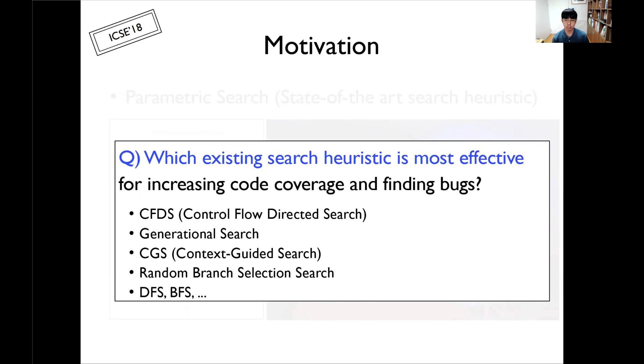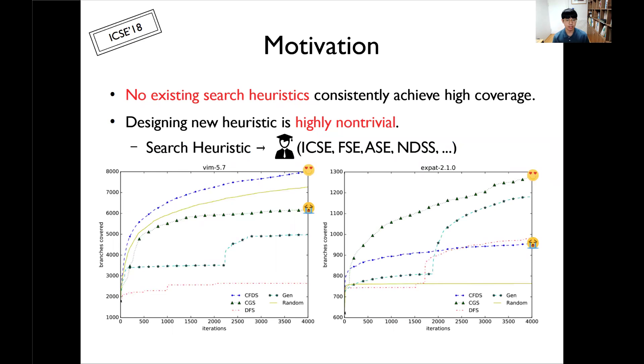So my question is, which existing search heuristic is the most effective for increasing code coverage or finding bugs? You have learned the key idea of each search heuristic, so pick one that is likely to be effective. CFDS, generational search, CGS, DFS, or BFS? At the beginning of my research, I thought that the context-guided search CGS heuristic would be the best. But as a result, we found that there is no search heuristic that consistently achieves high branch coverage on arbitrary open source C programs.